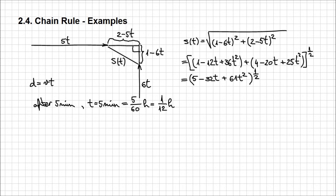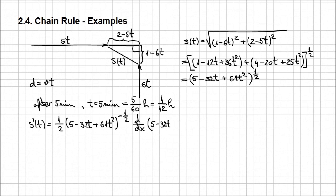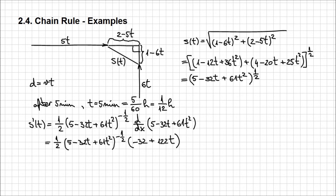As long as you constructed your problem correctly, at this point it becomes very simple to determine the derivative. S prime of T is going to be the power one-half times the expression in the parenthesis — five minus thirty-two T plus sixty-one T squared — at power one-half minus one, which is minus one-half, times the derivative of the inner expression five minus thirty-two T plus sixty-one T squared. Performing that derivative, we get one-half times five minus thirty-two T plus sixty-one T squared at power minus one-half, multiplied by minus thirty-two plus one hundred twenty-two T. This is the expression for our derivative S prime of T.